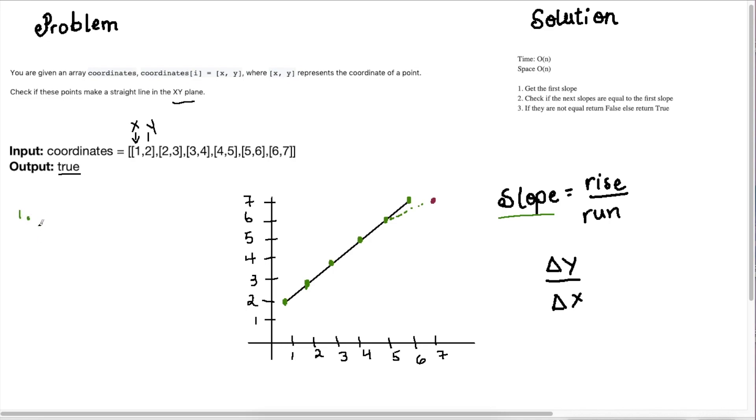So the first observation is if I'm given two points, the line between those two points is always going to be straight. So if I'm given two points, so if I only have these two and that's my input, I can safely say that I need to return true because if we draw a line between any two points, there is always going to be a straight line.